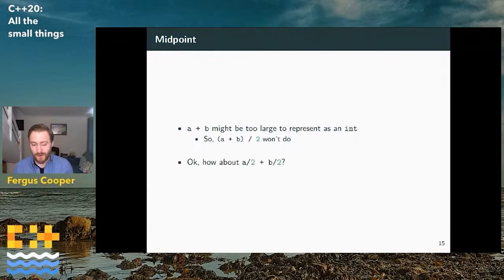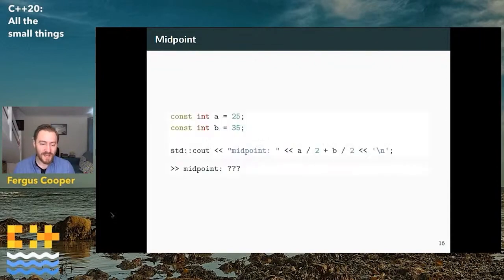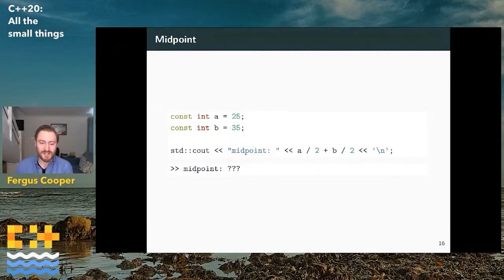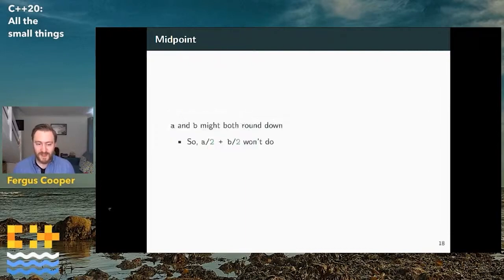As a mathematician — my undergraduate degree was mathematics — I know that a+b over 2 is mathematically identical to a/2 plus b/2. But immediately we can see the problem: 25 over 2 as an integer is 12, 35 over 2 is 17, so the midpoint is 29, not 30 — obviously the correct answer. If a and b are integers, they might both round down, so we lose the precision we need. Using the lerp formula with t=0.5 — a plus (b-a)/2 — runs into the same overflow problem: b-a could give us 2 billion plus a billion, 3 billion, which is too big.